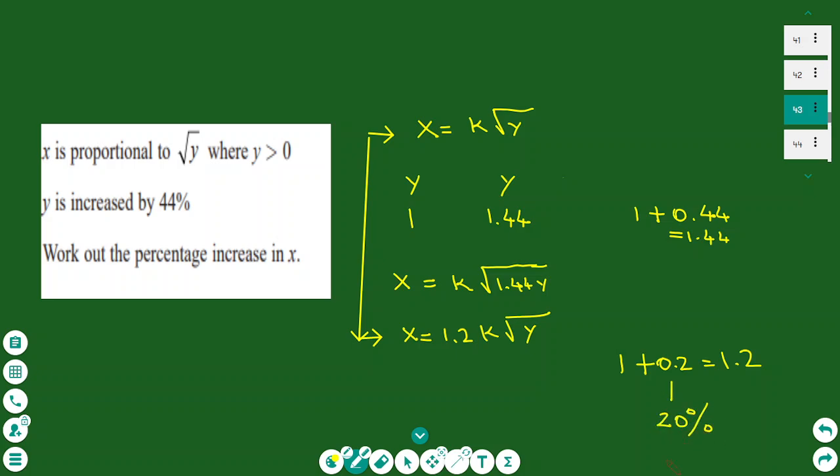This answers the exercise. This is a question on direct proportion linked with percentage increases. So the percentage change on x when y changes by 44% increase is 20% as the final answer.